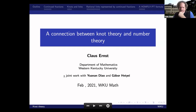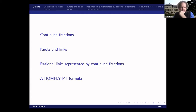Now, this last part of the talk, I know that most of you will not understand, and so that's perfectly fine. But for the first 80% of this talk, everybody should be able to follow. So here's an outline. I will talk about a number-theoretic concept of a continued fraction, then I will introduce knots and links, and then I will talk about the connection between knots and links and this continued fraction thing.